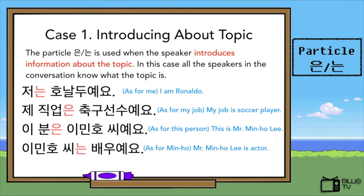This time, we are going to learn the cases where we have to use the particle 은 and 는. The first case is introducing a topic. The particle 은/는 is used when the speaker introduces information about the topic — for example, when introducing ourselves or others: 'As for me, I am Ronaldo.'